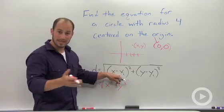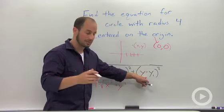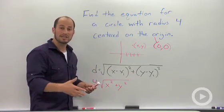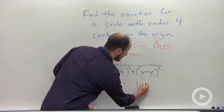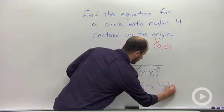X minus 0 is just x, so we get x². Y minus 0 is y, so we get y². Now to get rid of the square root, we square both sides, and we end up with 16 equals x² plus y².